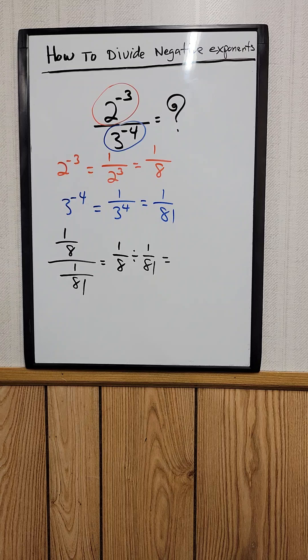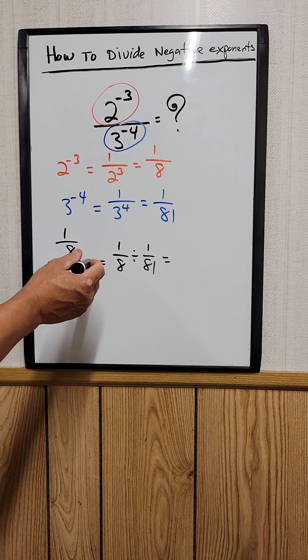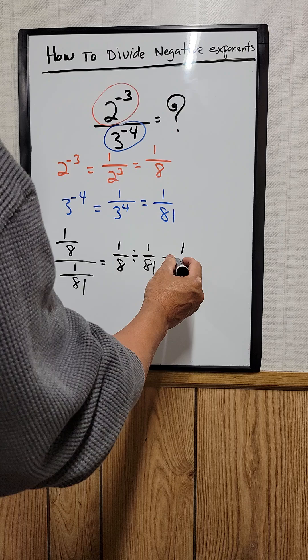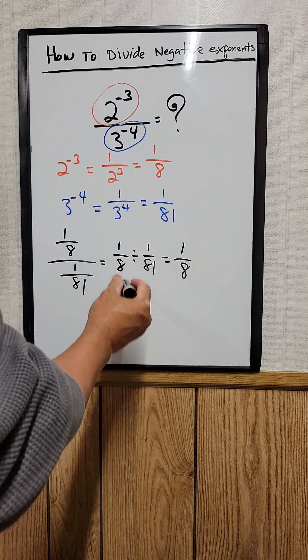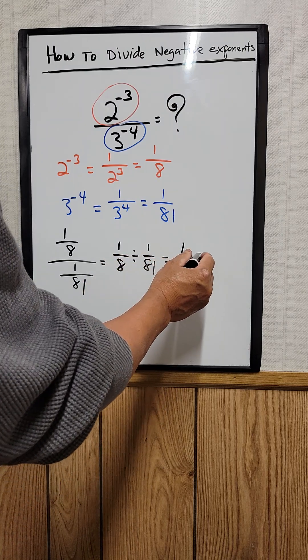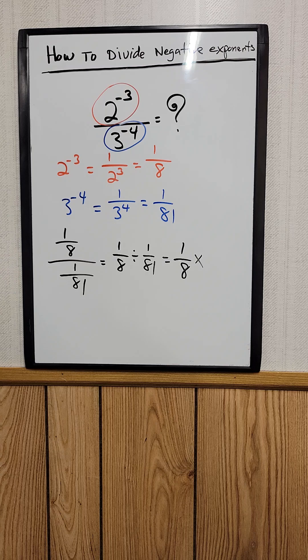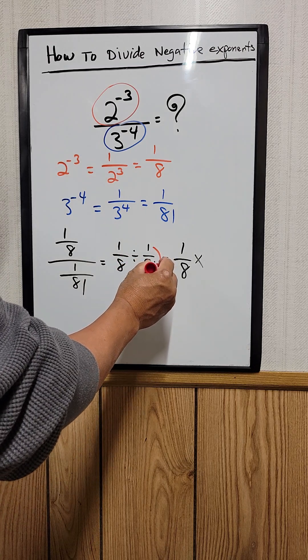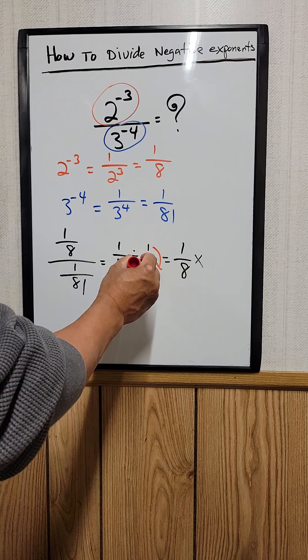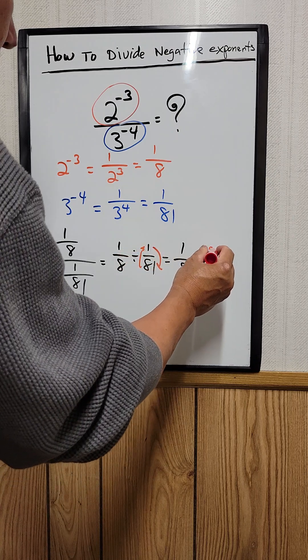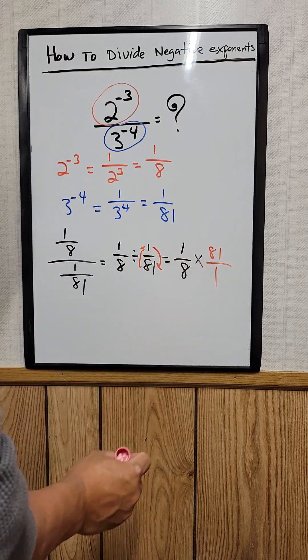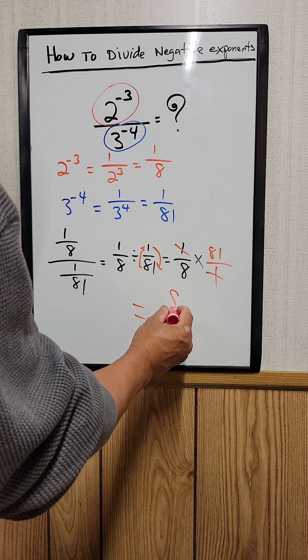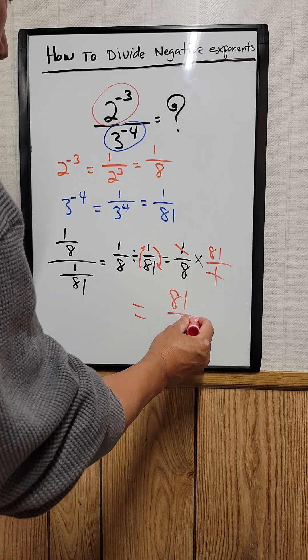And you know, once you divide any number by a fraction, all you need to do is take 1/8 and then you just change the sign to multiplication, and then you just flip the top to the bottom, the bottom to the top. So 81 over 1, and then 1 cancels out. All you have left is 81 over 8. So that's the answer.